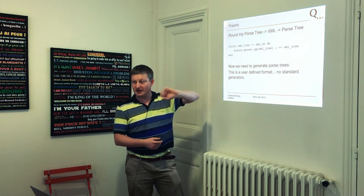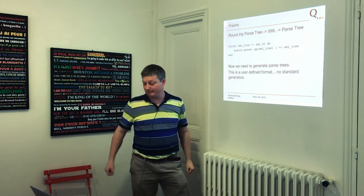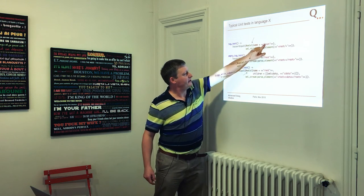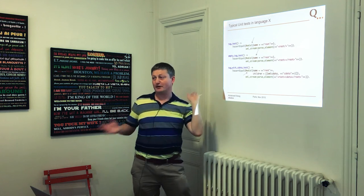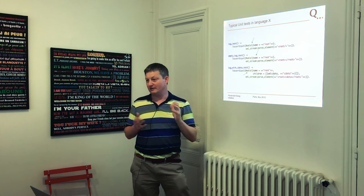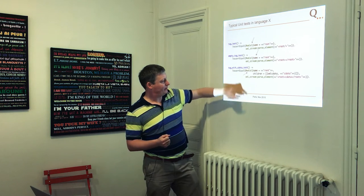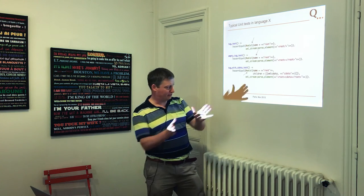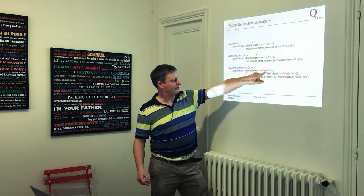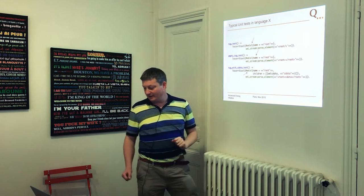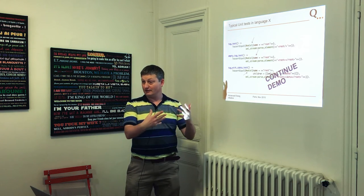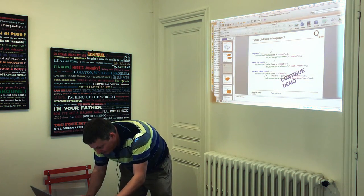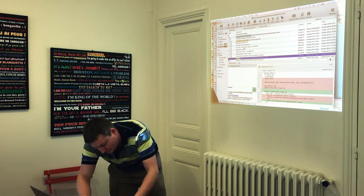The reason is that ejabberd represents XML trees in its own internal record structure. If I want to do this, I have to generate ejabberd-specific XML parse trees — I can't use a standard generator. I have to write a generator. How difficult would that be? Let's see. So we're going to generate parse trees, then print them, parse them, and check they're the same.